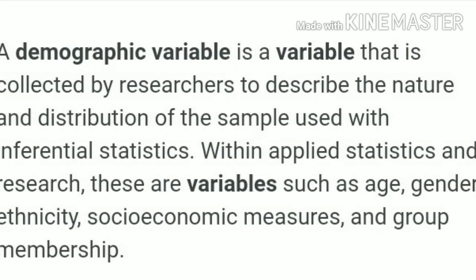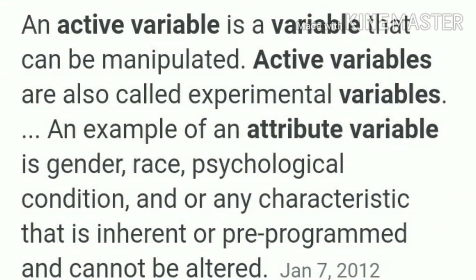Next is demographic variable. These are variables used for describing the sample and showing that the sample is representative of the population. Common demographic variables are gender, age, marital status, income, and occupation. The last category is active variables and attributed variables. Active variables are those which have been changed and are controlled by a researcher — for example, monthly expenditure of a household on vegetables. Attributed variables are those which cannot be changed and are not under the control of the researcher — for example, age and gender of the respondents. Active and attributed variables are types of independent variables.